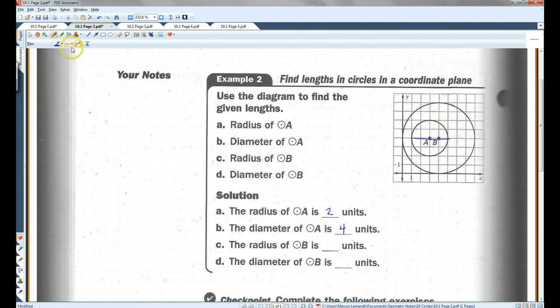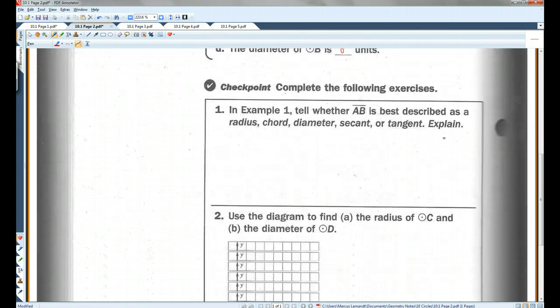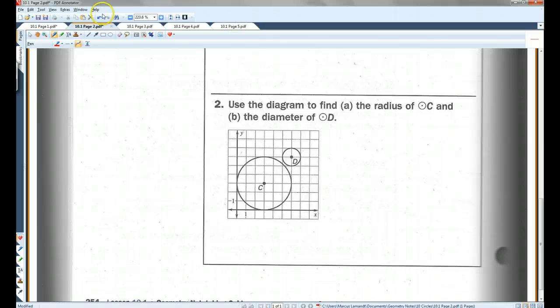The radius of B. Let's change colors. Use red. From the center to the edge. One, two, three, four. Which means the diameter would have to be eight. Because that's all the way across. I'm going to let you guys do the checkpoint on your own. Let's go on to page three.